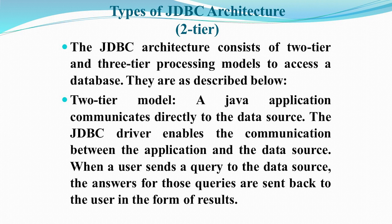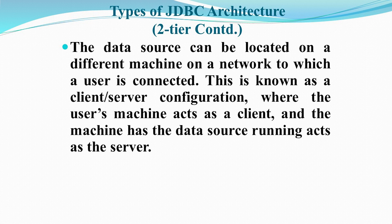There are two kinds of JDBC architectures: two-tier and three-tier. In the two-tier model, a Java application communicates directly to the data source. The JDBC driver enables communication between the application and the data source. When a user sends a query, the answers are sent back to the user as results. In this model, the data source can be located on a different machine on the network — this is known as the client-server configuration.